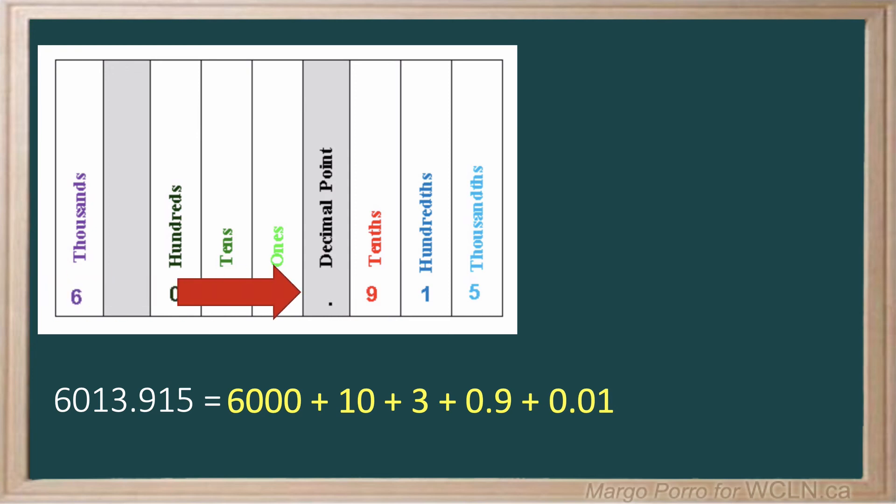And then we add the 5 in the thousandths place. It's 3 places over from the decimal, so in our number, it lands 3 places over from the decimal as well.